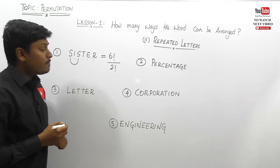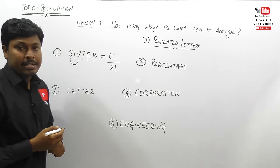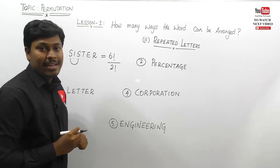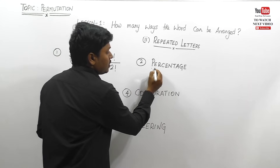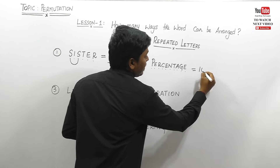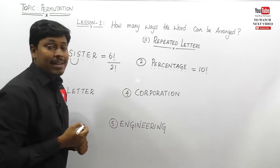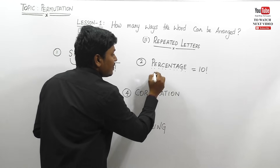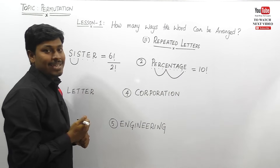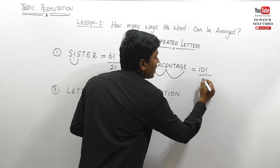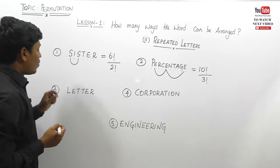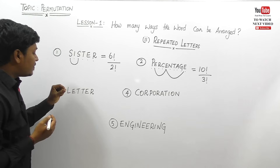Second example: how many ways can the word PERCENTAGE be arranged? Count the letters — one, two, three, four, five, six, seven, eight, nine, ten — so this is ten factorial. Now check how many letters are repeated: E appears one, two, three times. So the answer is ten factorial divided by three factorial, where the three factorial is for E.